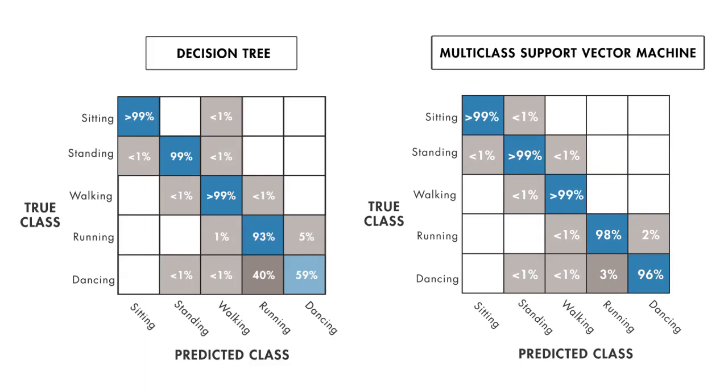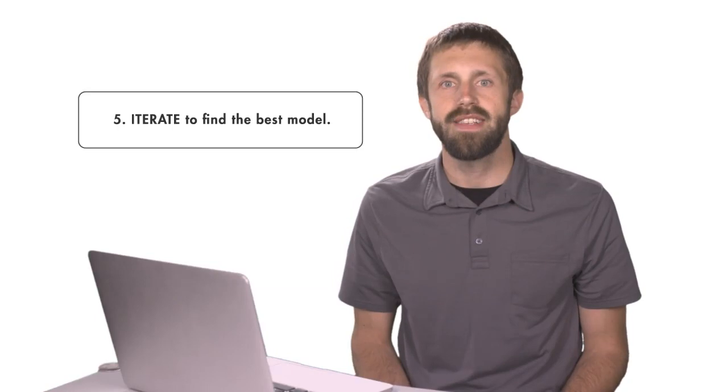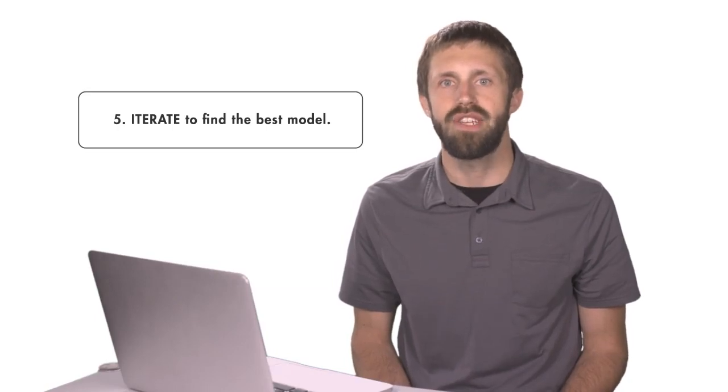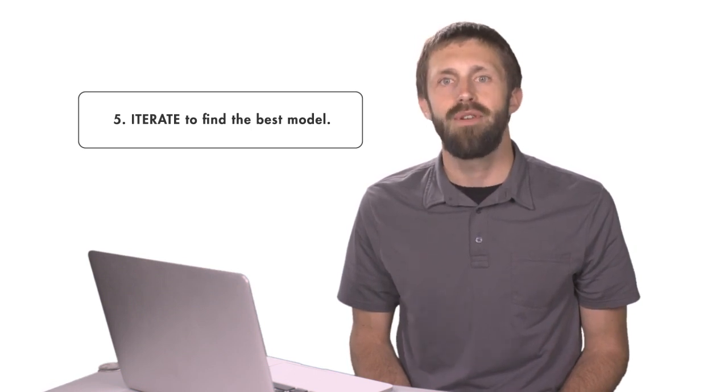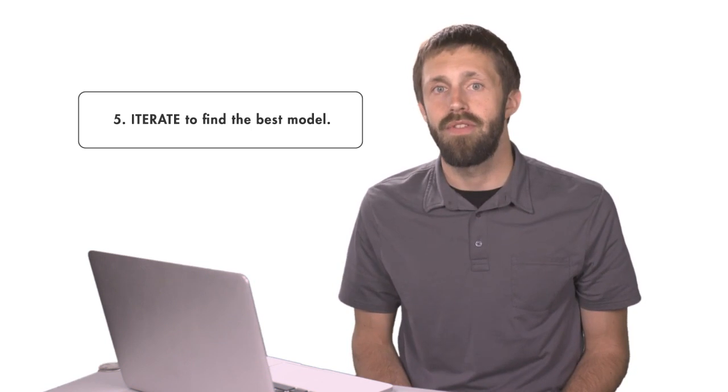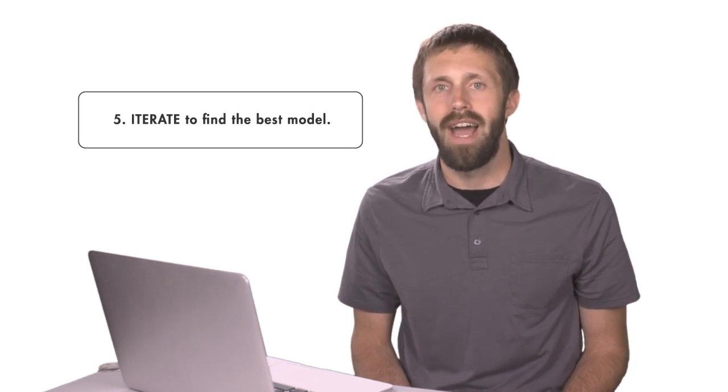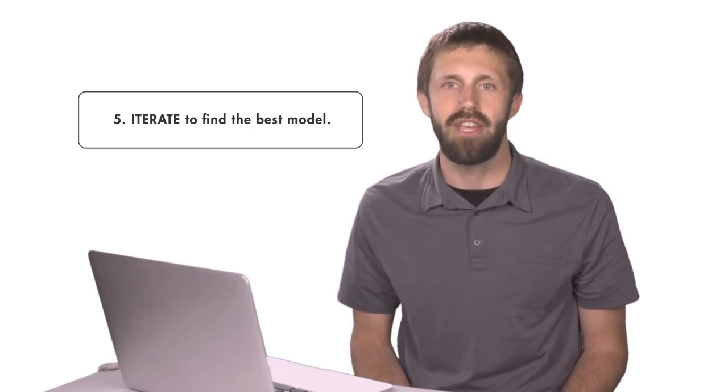However, it's rarely this simple. If our classifiers still couldn't reliably differentiate between dancing and running, we'd look into other ways to improve the model. Improving a model can take two different directions: make the model simpler to avoid overfitting, or add complexity in order to improve accuracy.